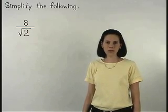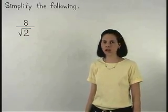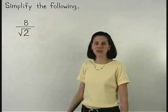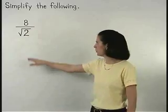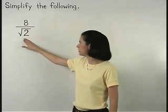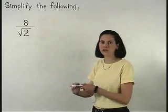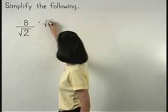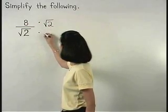However, remember that we also cannot have a radical in the denominator of our final answer. So since we have the square root of 2 in the denominator, to get rid of the radical, we multiply the numerator and denominator of the fraction by the square root of 2.